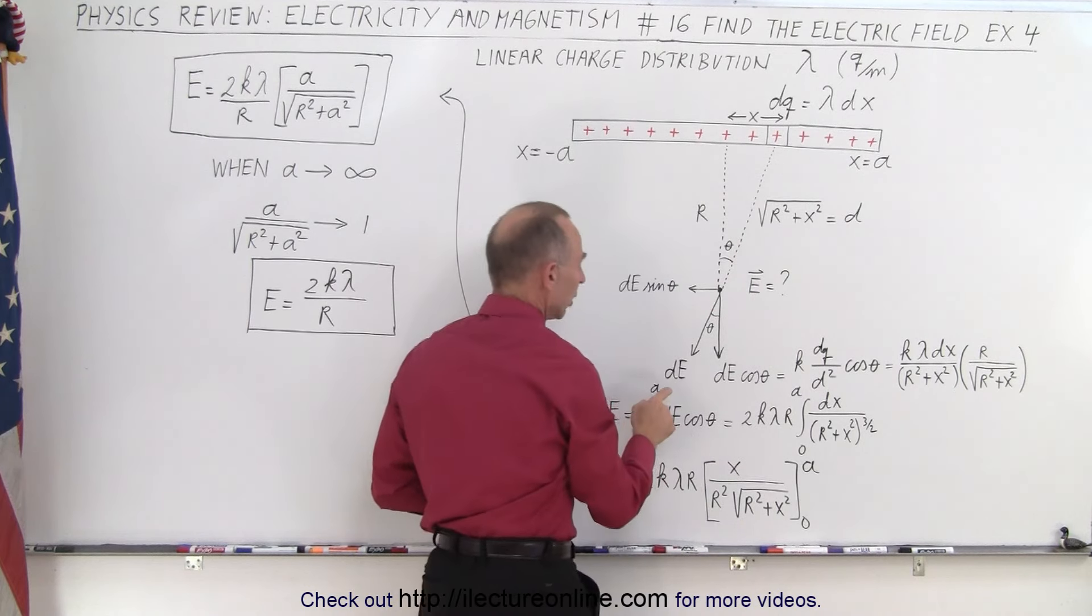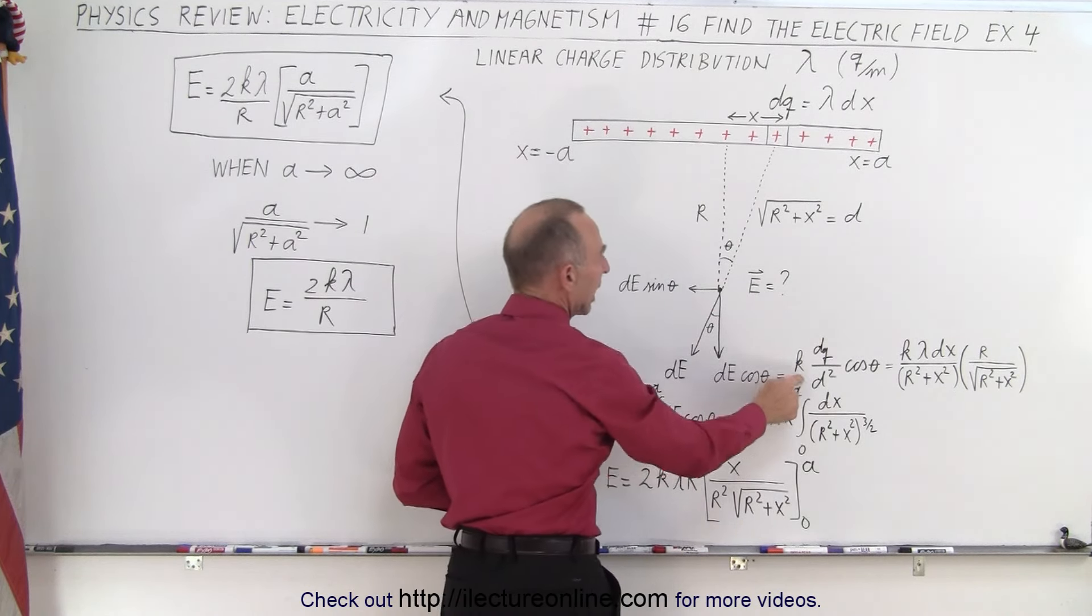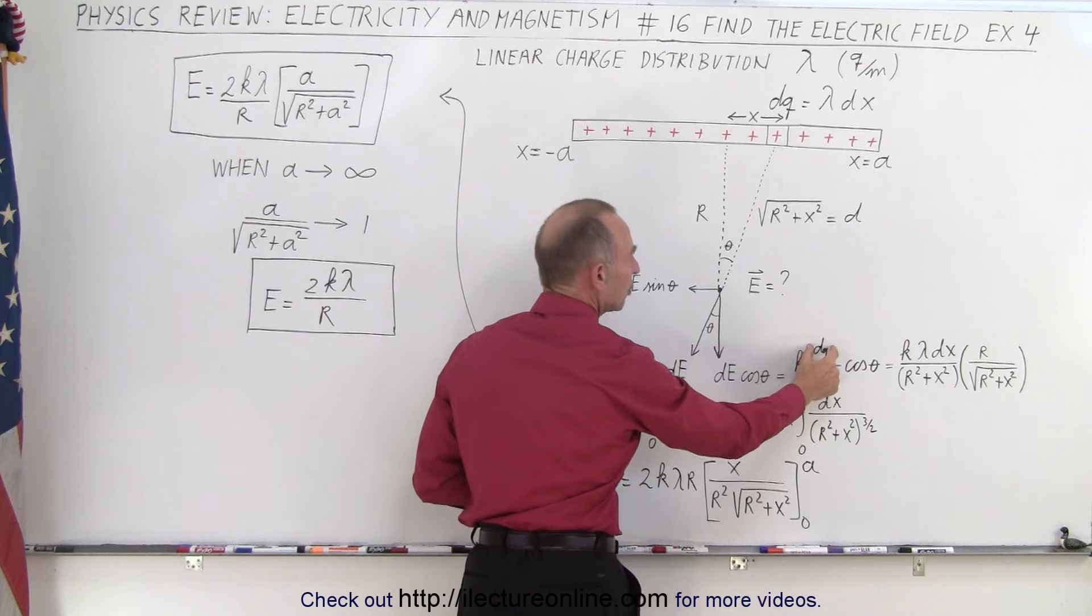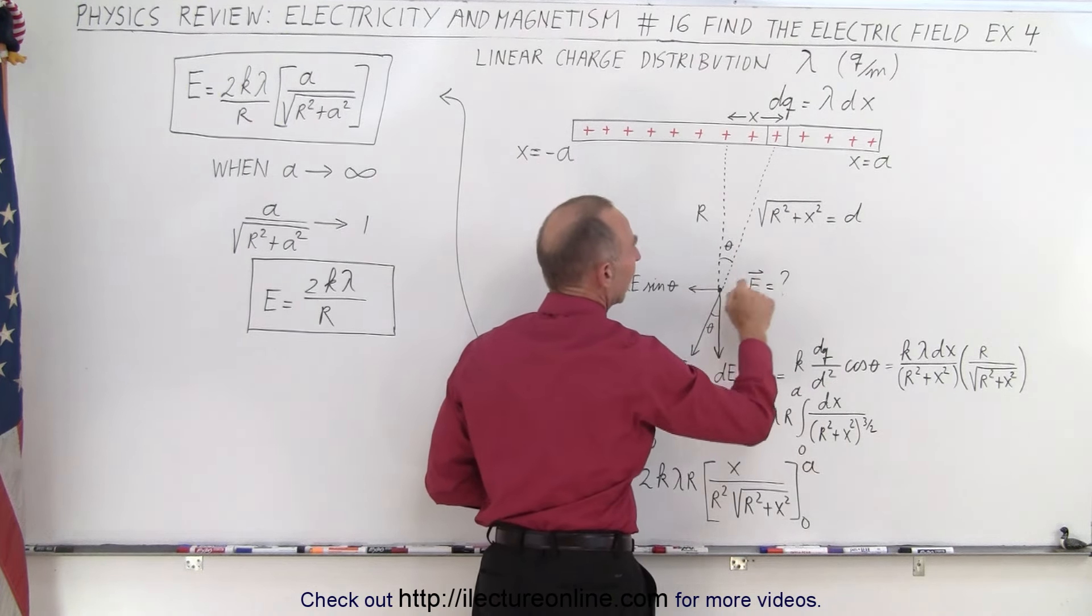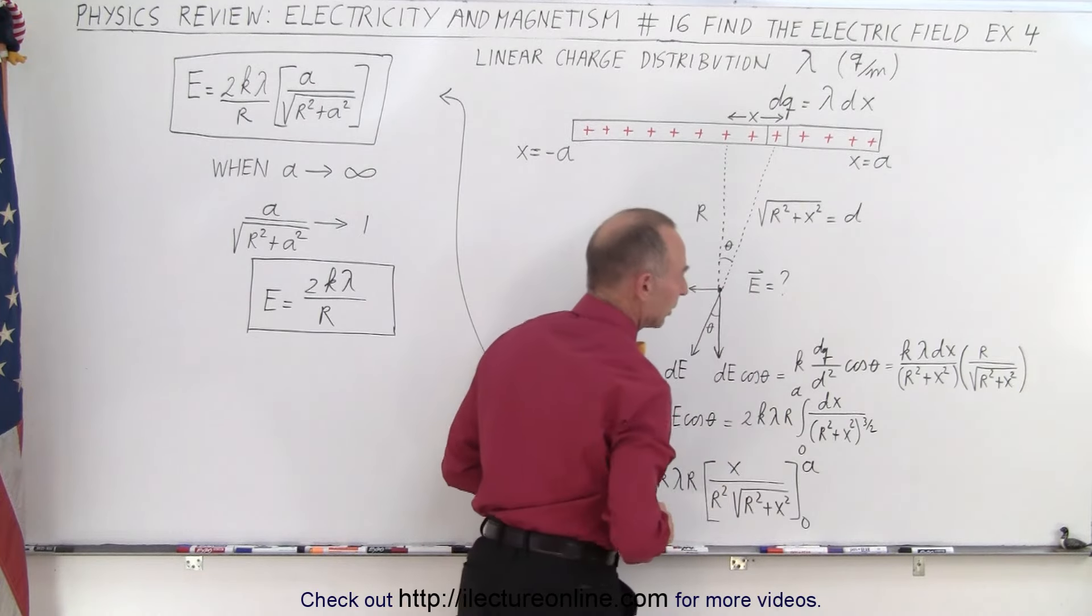Notice that we also have to define this distance, because after all the dE is going to be equal to k times the charge dq divided by the distance. So we're talking about this distance right here, and that is going to be equal to the square root of r squared plus x squared.